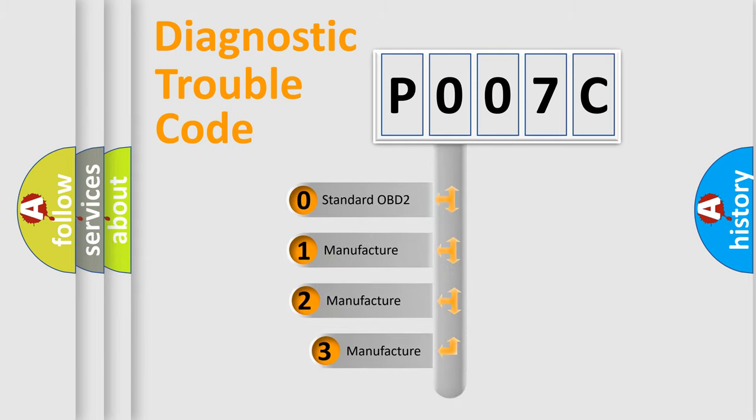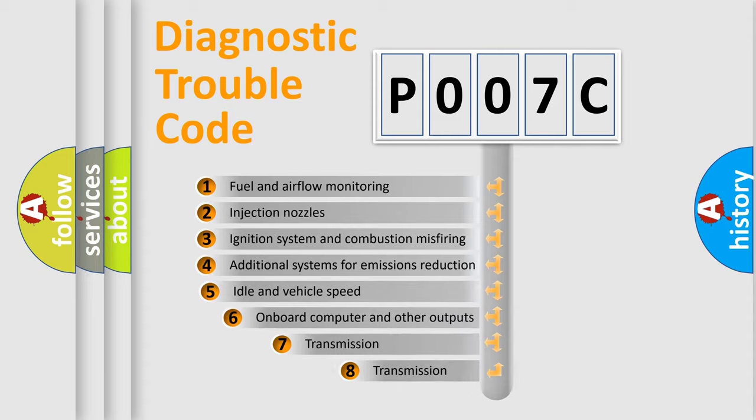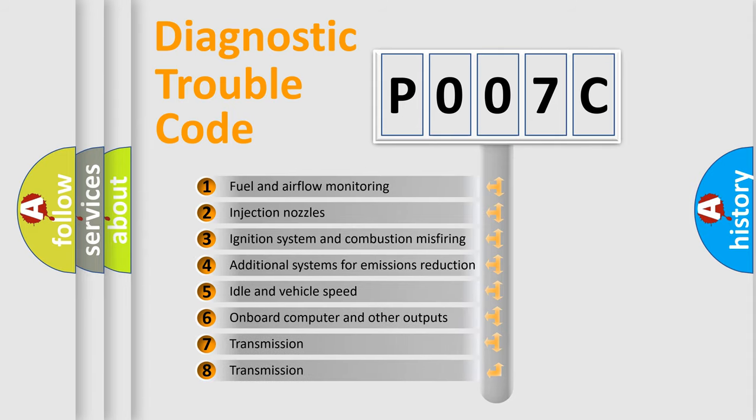If the second character is expressed as zero, it is a standardized error. In the case of numbers 1, 2, or 3, it is a manufacturer-specific expression of the car error. The third character specifies a subset of errors.